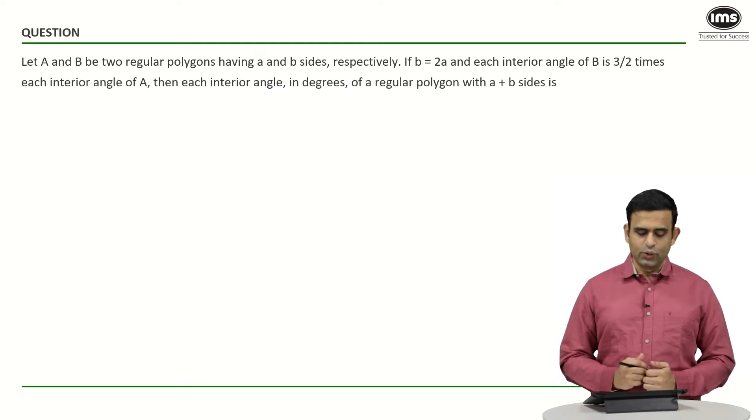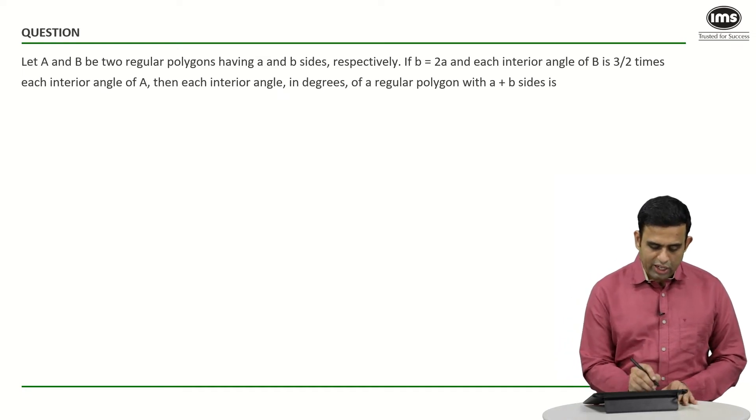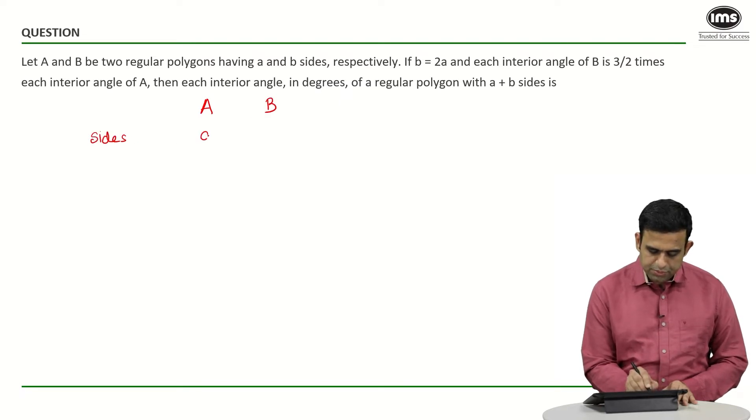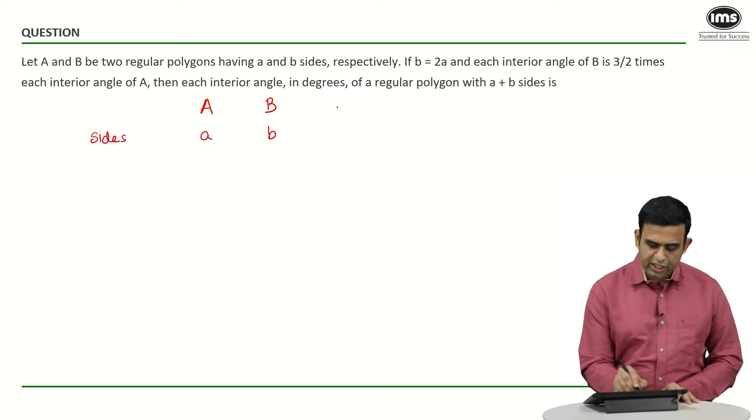Understand one thing: if you look at the two polygons capital A and capital B, the sides are small a and small b. They have given us that small b equals twice of a.